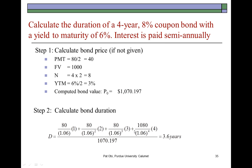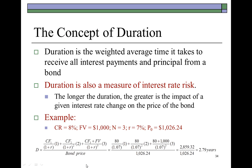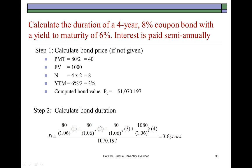Here is a general example: calculate the duration of a four-year 8% coupon bond with a yield to maturity of 6% where interest is paid semi-annually. To calculate duration, you need the price. In this example the price was not provided, so in step one we calculate the price ourselves. Armed with the price, we plug it in along with all the other entries and determine the duration to be 3.6 years.